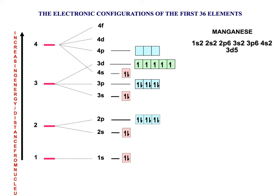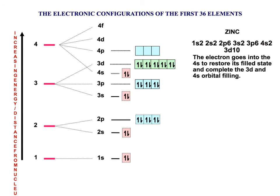Manganese backfills the 4S. Then iron starts to backfill the 3D, followed by cobalt. Copper does the same unusual thing as chromium — it promotes one of the 4S electrons into the 3D subshell because this is a more stable configuration. Finally, zinc backfills the 4S subshell.